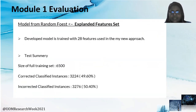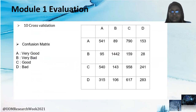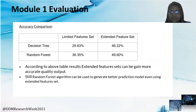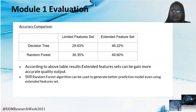The evaluation technique using confusion metrics is carried out. The accuracy level comparison of the results are shown in the table, and according to the table, extended feature sets can yield more accurate quality output. The random forest algorithm can be used to generate a better prediction model even using an extended feature set.